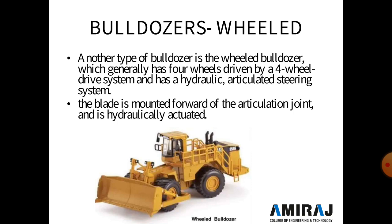Another type of bulldozer is the wheel-mounted bulldozer, which is generally driven by a four-wheel-drive system and has a hydraulic articulated steering system. The blade is mounted forward of the articulation joint and is hydraulically actuated.